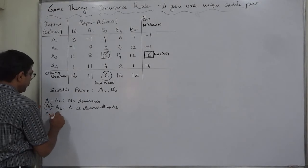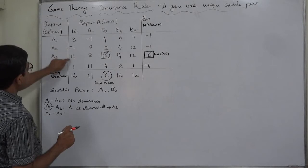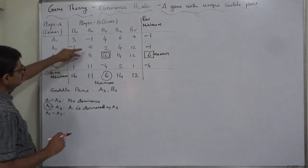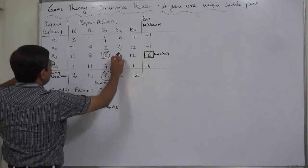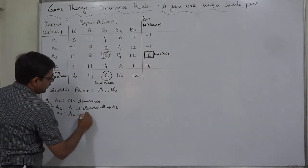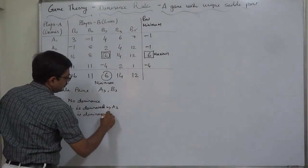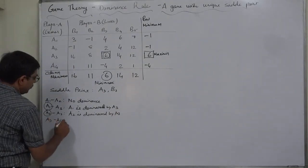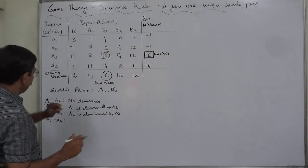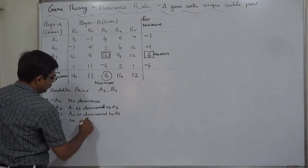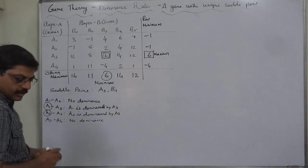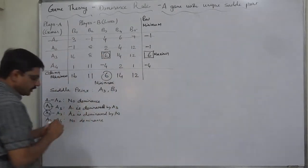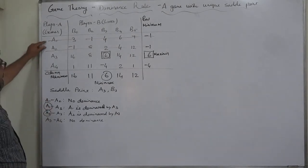A3 dominates in these comparisons — in two cases they are equal but in all other cases A3 dominates. So A2 is dominated by A3. Now comparing A3 and A4: A3 dominates in one, A4 dominates in another — so no dominance either way. Therefore we delete A1 and A2, because Player A will never adapt strategy A1 or A2.